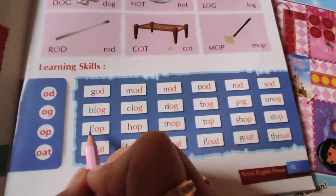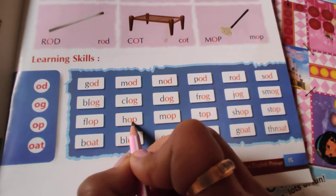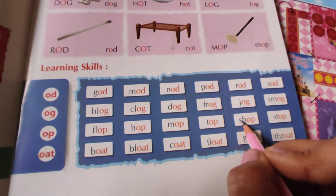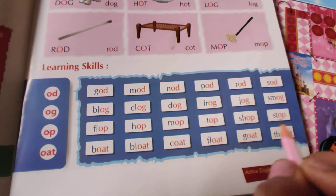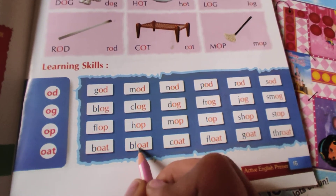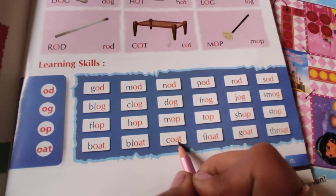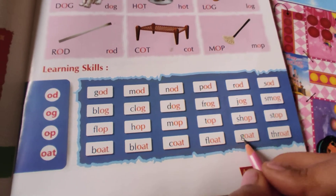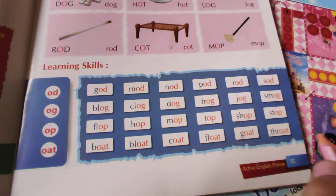O-P phonic drill: F-L-O-P — Flop. H-O-P — Hop. M-O-P — Mop. T-O-P — Top. S-H-O-P — Shop. S-T-O-P — Stop. O-A-T: B-O-A-T — Boat. B-L-O-A-T — Bloat. C-O-A-T — Coat. F-L-O-A-T — Float. G-O-A-T — Goat. T-H-R-O-A-T — Throat.